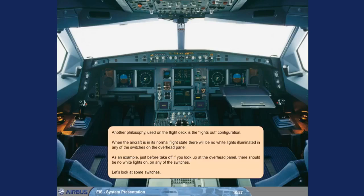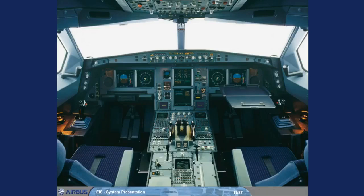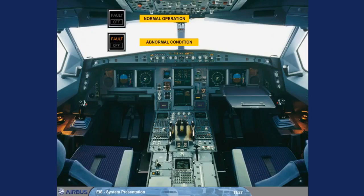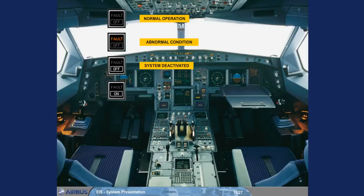Let's look at some switches. For the majority of the switches on the overhead panel, the push-button switch logic is: normal configuration — no lights showing, following the lights-out philosophy. Abnormal condition — an amber fault light, which helps to identify the switch related to an abnormal condition. If normally the system should be operating and is deactivated, a white OFF light comes on. If normally the system should not be operating and is activated, a white ON light comes on.